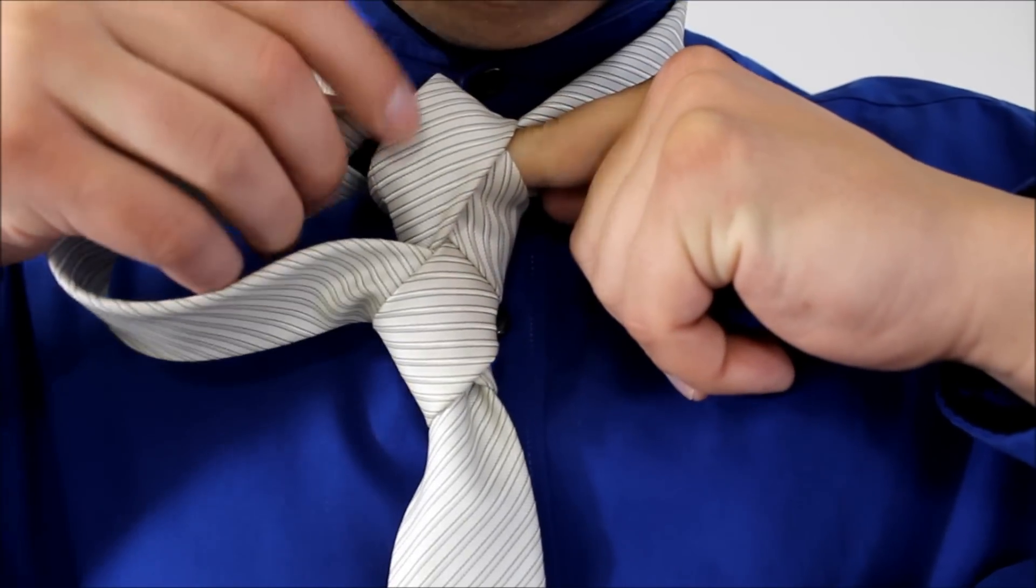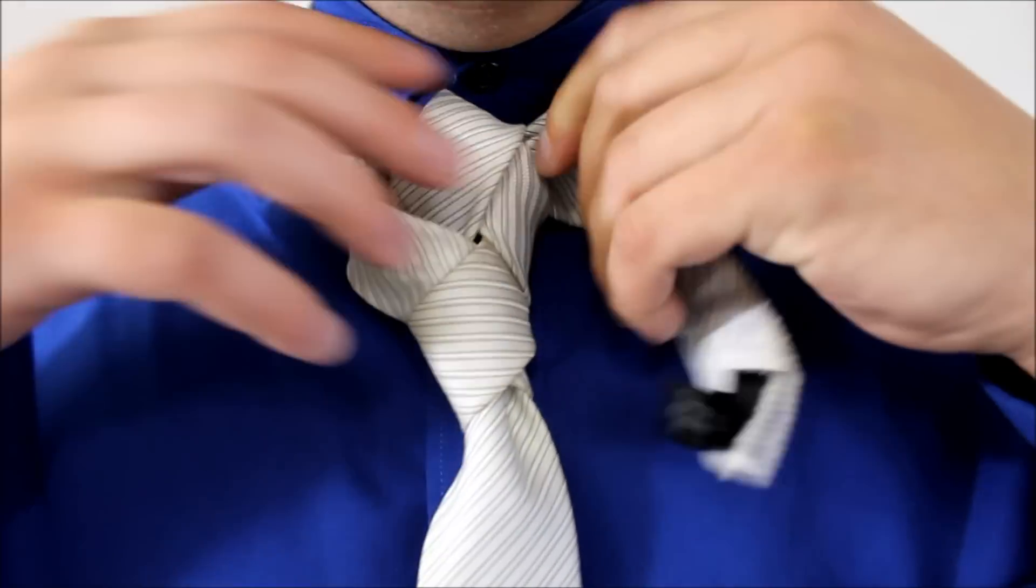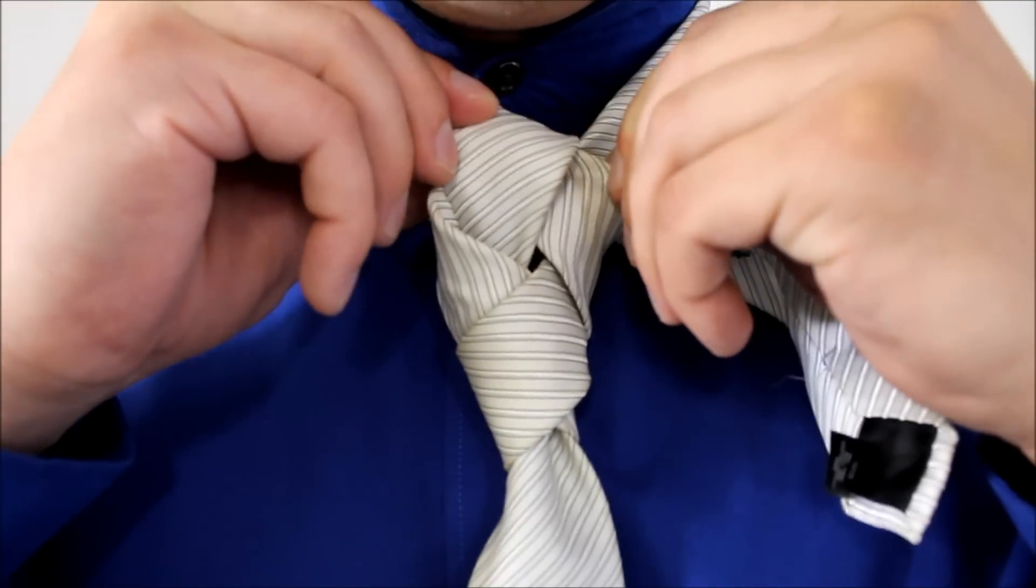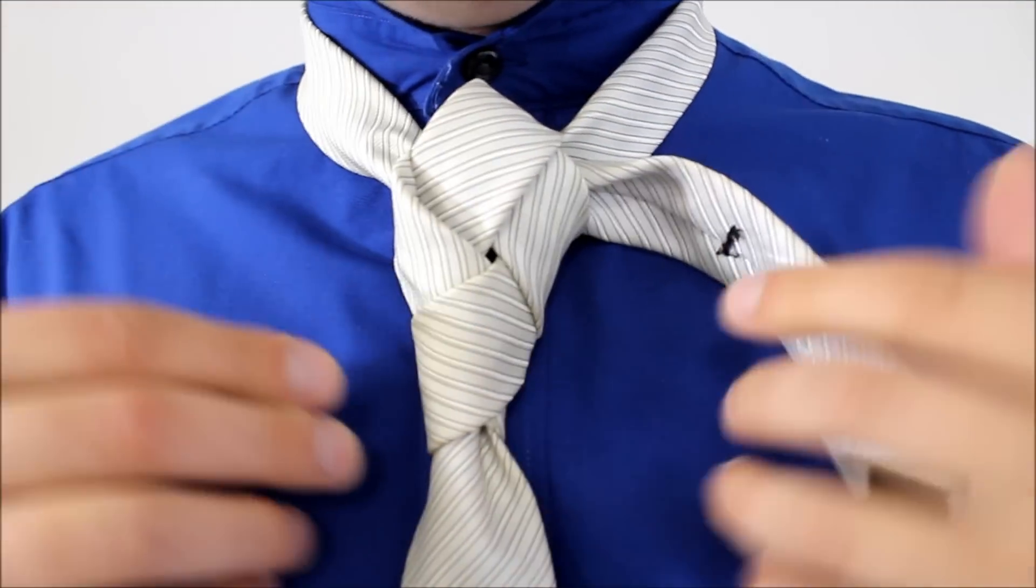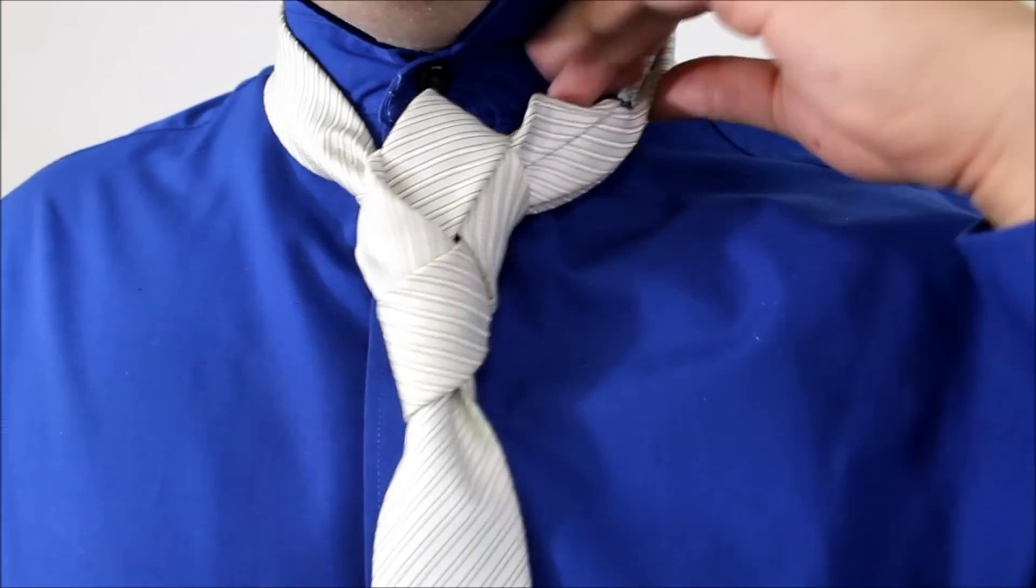we're going to fold the necktie by feeding it underneath these two pieces, and across. And we're going to finish this knot off by tucking the little end behind your collar.